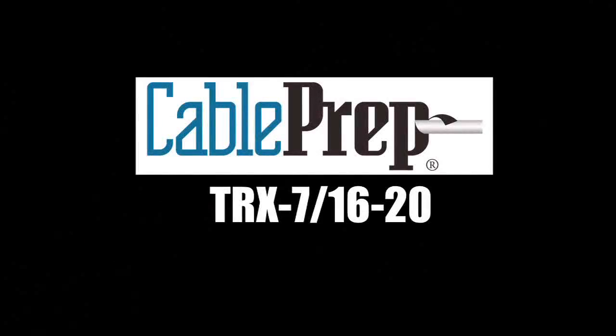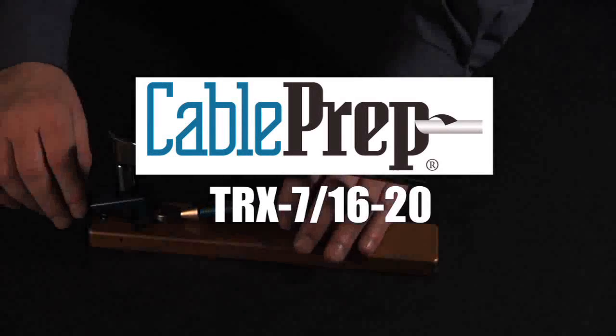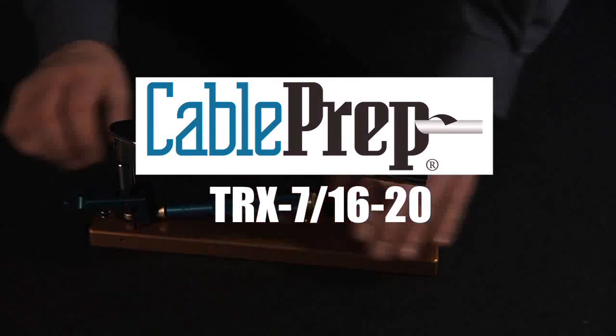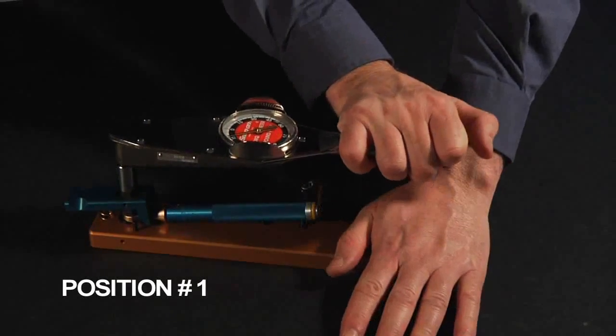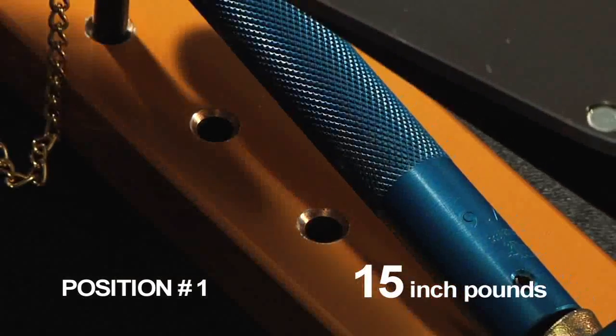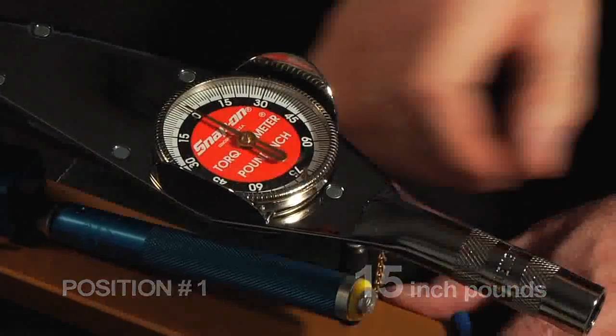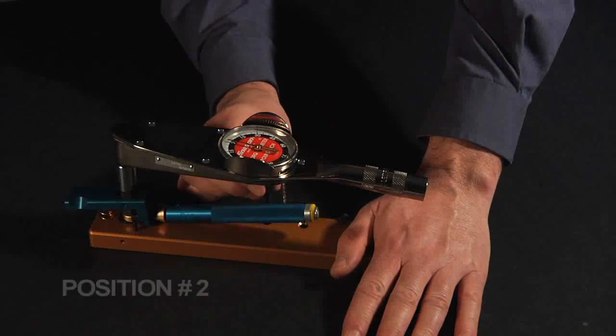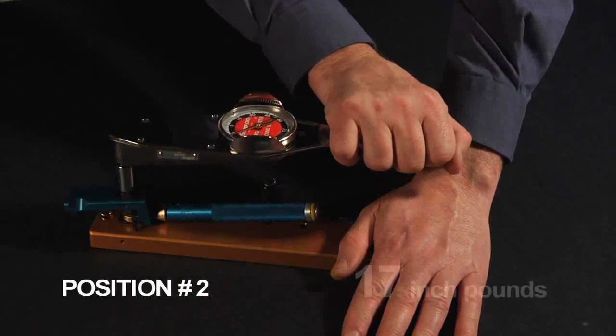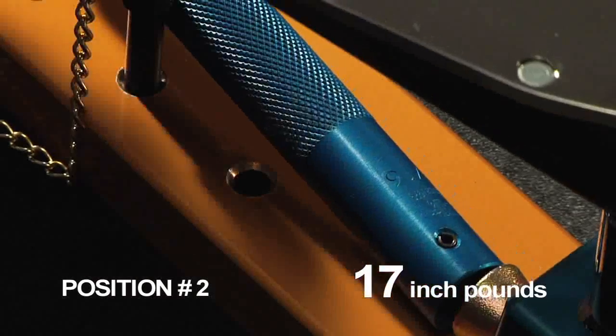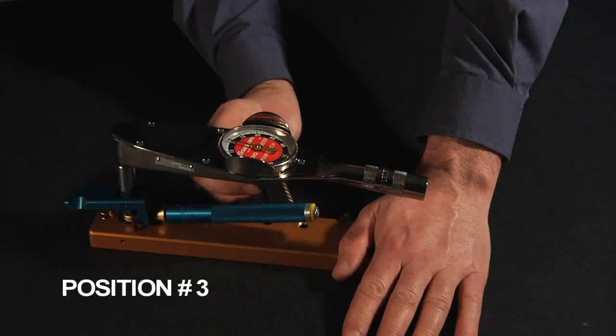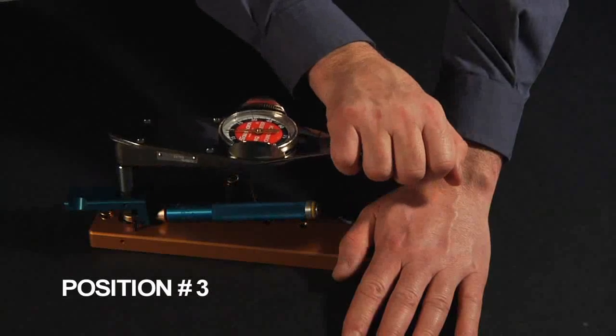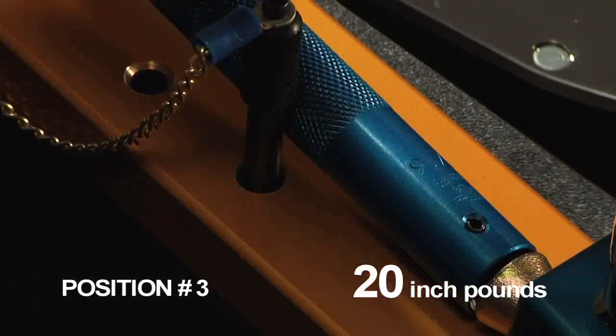The TRX 716-20 provides much more consistent torque over the range of the handle. At position one, a torque of 15 inch-pounds is exerted. At position two, we get a reading of 17 inch-pounds. And in the third position, we get an exact measurement of 20 inch-pounds.